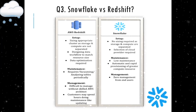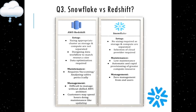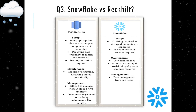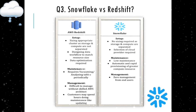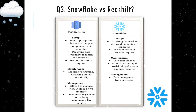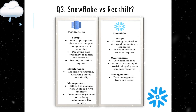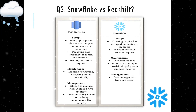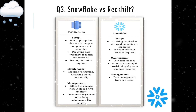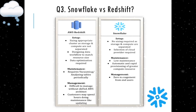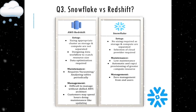AWS natively provides support for Redshift, so you can easily connect other services like Lambda or RDS to it. But connecting to Snowflake takes more time since it is not natively supported. With Snowflake, you just create an account, load your data, and query it. With Redshift, you need to create a Redshift cluster, and storage and compute are not separated — while in Snowflake, both are separated.